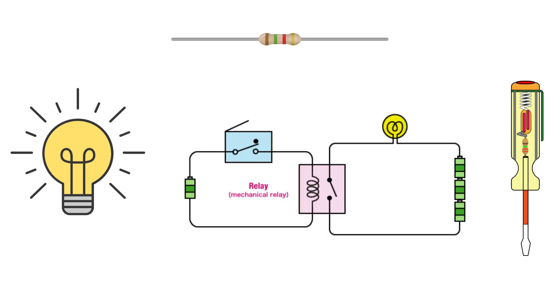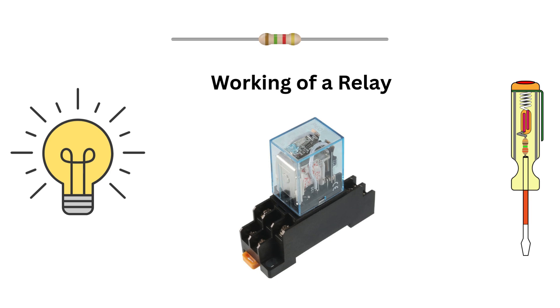Think of a relay as a remote control switch. Instead of manually turning something on or off, a small electrical signal activates the relay, which in turn controls another circuit. This makes relays essential in automation, motor control and even household appliances. Now let's break down how a relay works.